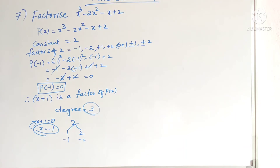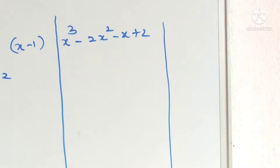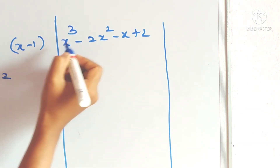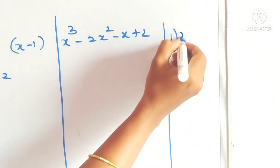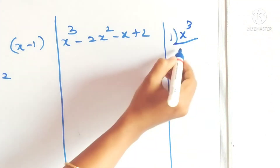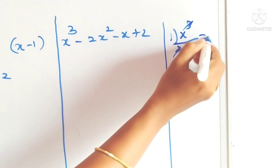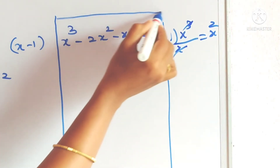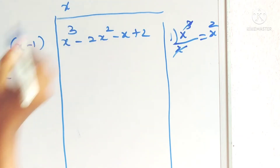So how will we divide? Let us see. Now we have to divide the polynomial with x plus 1 to find the remaining factors. For that, take the first term here: x cube. And here the first term is x, giving x square. Write it in the quotient.